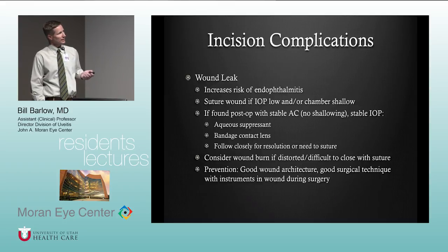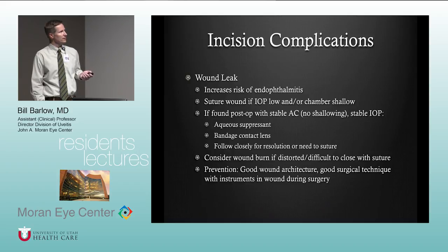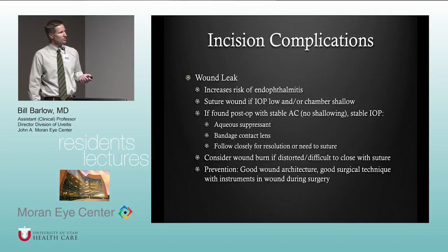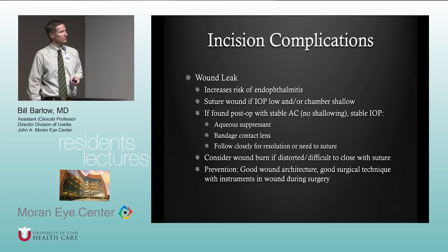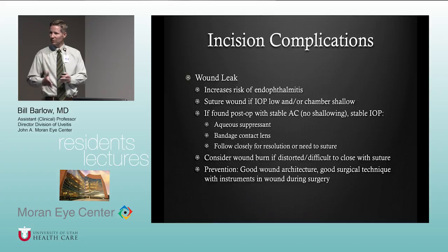Wound leak increases the risk of endophthalmitis. If the IOP is low and the chamber is shallow, suture the wound — go back to the OR. If there's a small wound leak but the AC is stable, no shallowing, and stable IOP, use an aqueous suppressant with a bandage contact lens and follow closely. If there's distortion or difficulty closing with suture, make sure you don't have an unrecognized wound burn. Prevention is good wound architecture and surgical technique — learning to pivot within the wound rather than putting excessive pressure on either side.